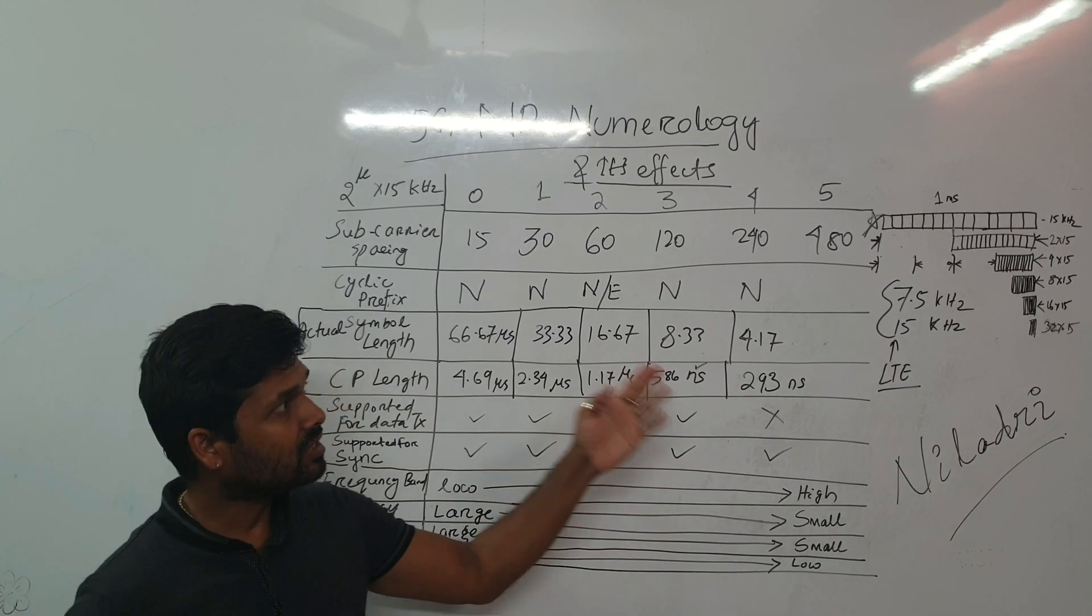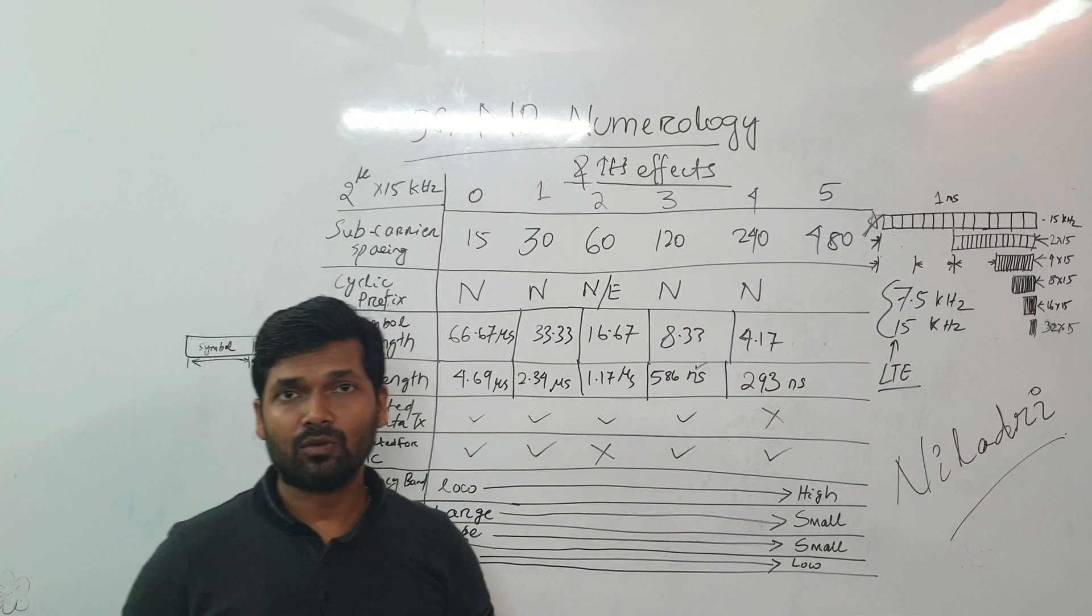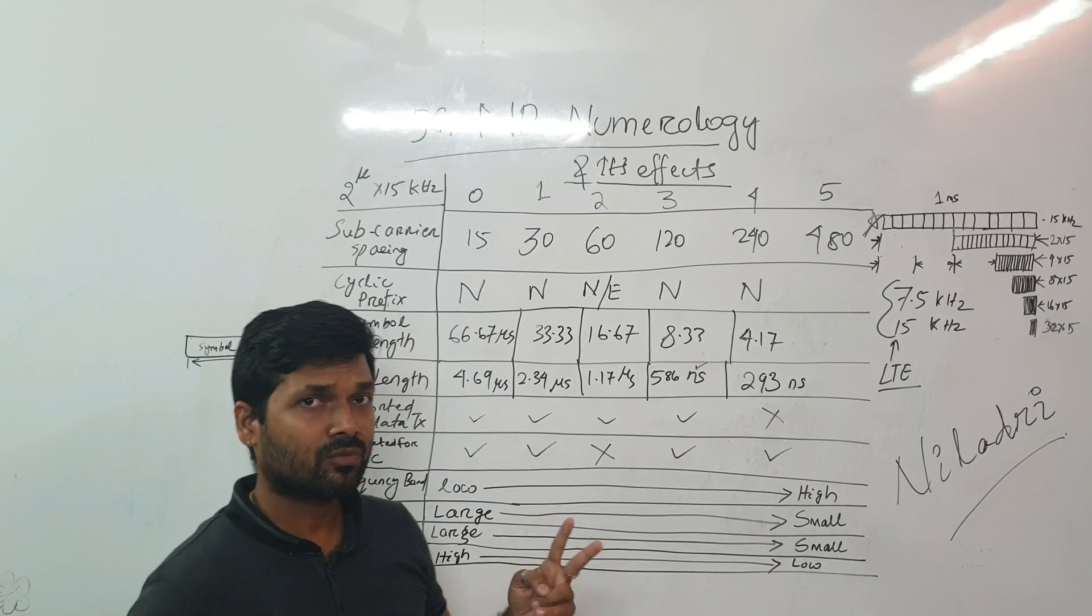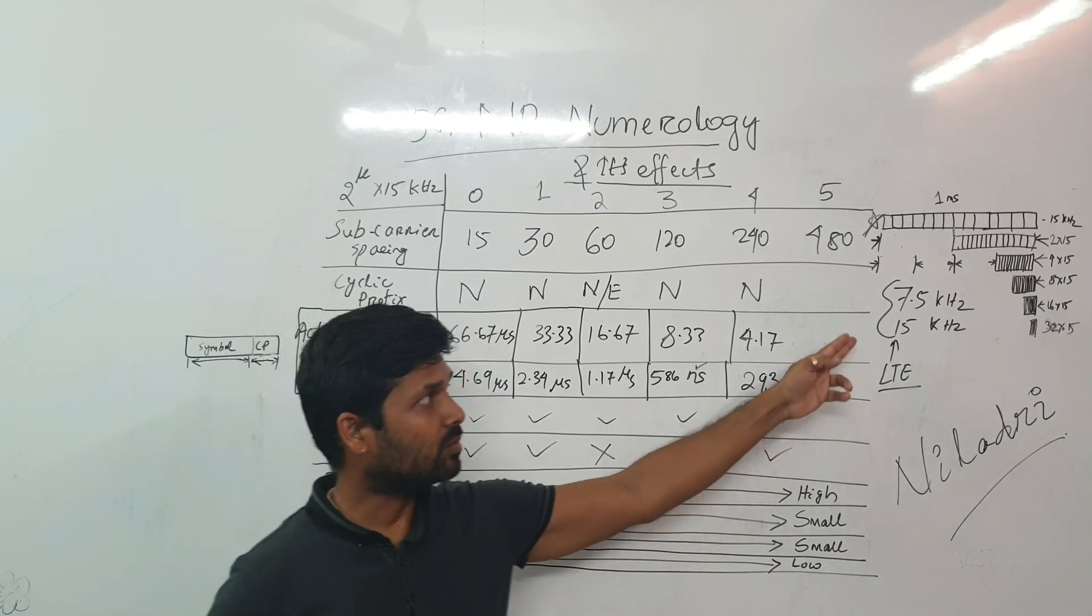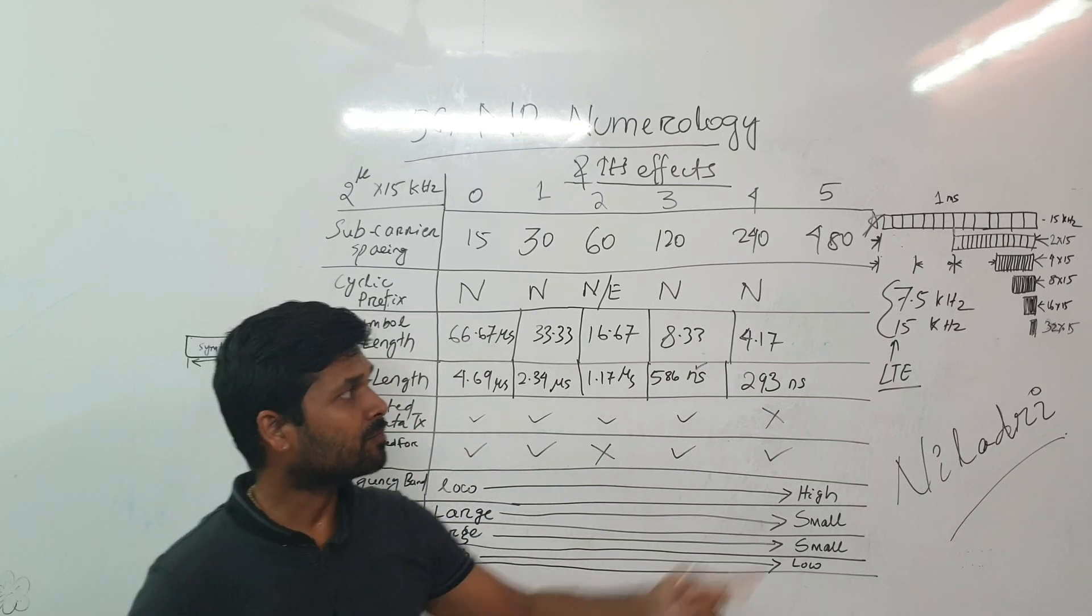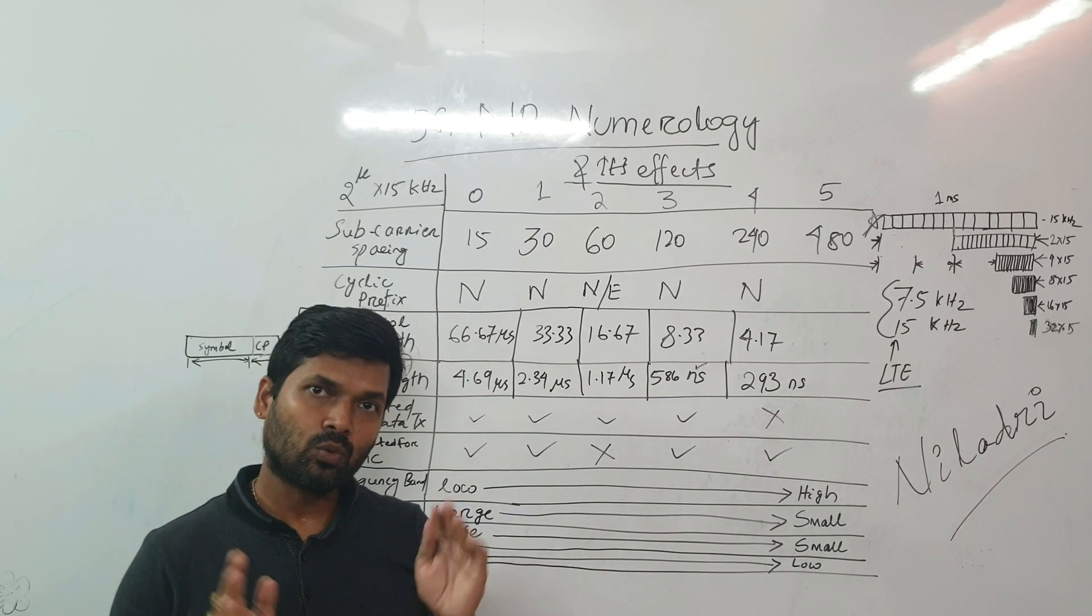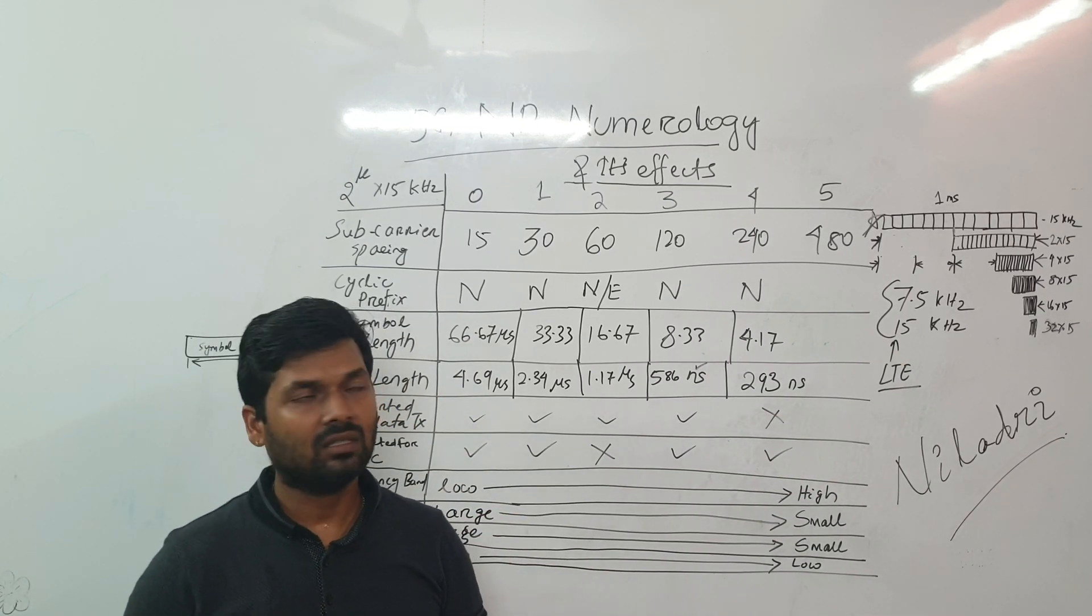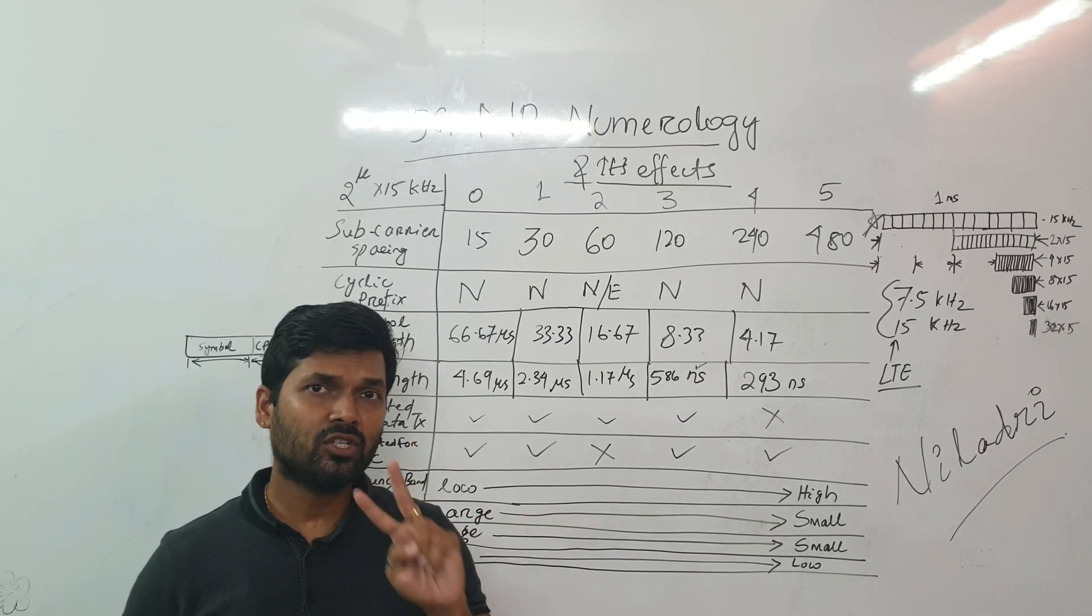We know that in LTE we have two different types of subcarrier spacing used: 7.5 kilohertz and then 15 kilohertz. So that was there in LTE. So we have limitation of only two.